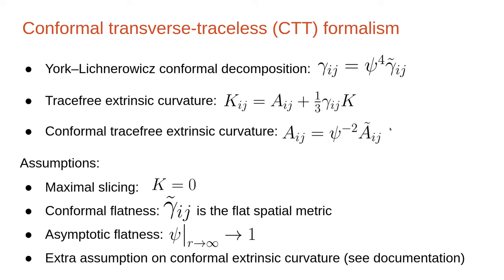The assumptions are: maximum slicing, which means the trace of the extrinsic curvature is zero; conformal flatness, meaning the conformal metric is the flat spatial metric; asymptotic flatness, so at spatial infinity the conformal factor goes to one; and there's also an extra assumption on the conformal extrinsic curvature that's more mathematically involved. You can see the original paper or the documentation I'm going to show you later.